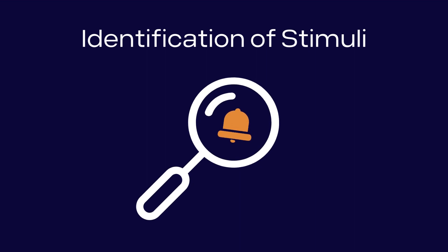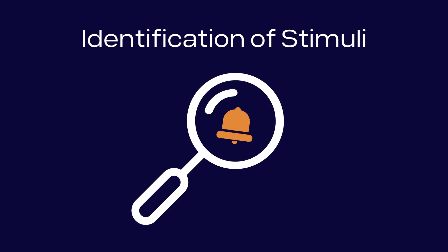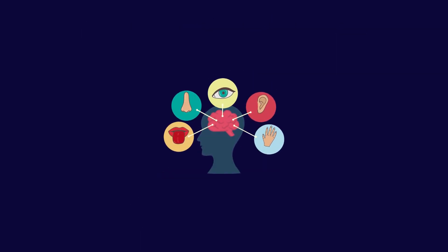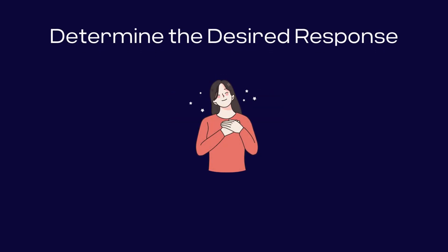Identification of stimuli: find the specific stimuli you want to associate with. This could be a sound, an image, or another sensory cue. Determine the desired response: identify the natural response you want to associate with the conditioned stimulus.